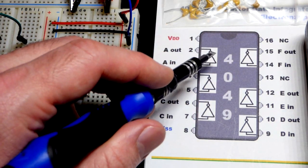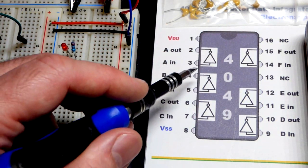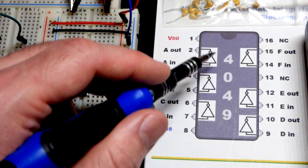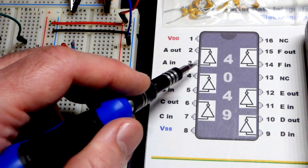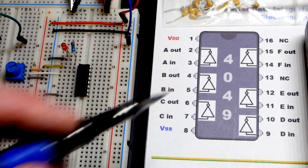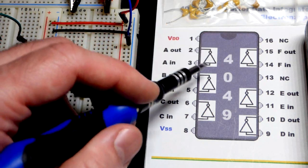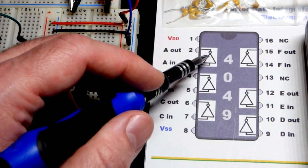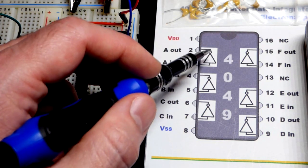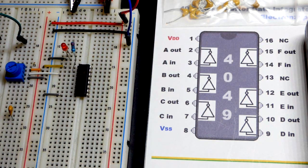The dots on top of the triangle indicate that the output is inverted from the input. So you give a low input, you'll have a high output. High input, low output. The buffer doesn't have that dot, and you just have the triangle. And so a low input, low output. High input, high output. That's the difference.